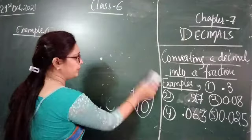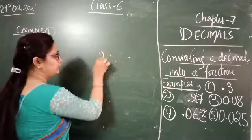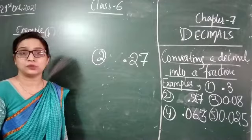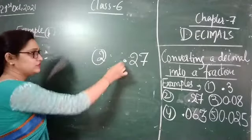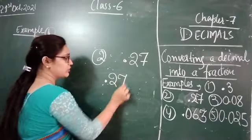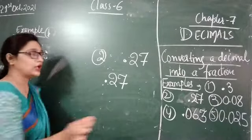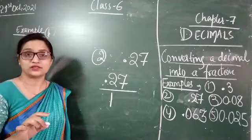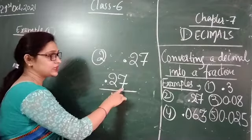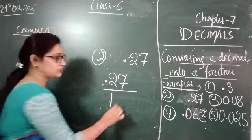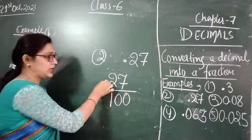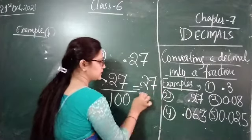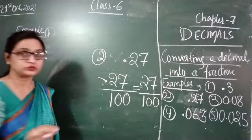Let us take another example, that is example number 2: 0.27. Here also we follow the same steps, but there is a difference. Write 0.27 in place of the numerator. Now in place of the denominator, write 1 followed by zeros. We observe the place values: ones and tens — two place values are there — so we put two zeros and remove the decimal point. The fraction we are getting is 27 upon 100.